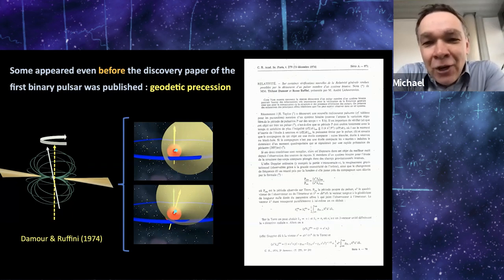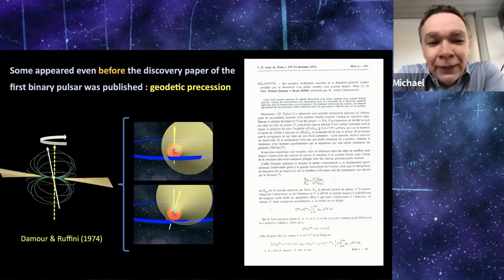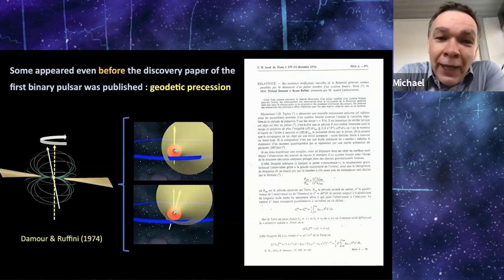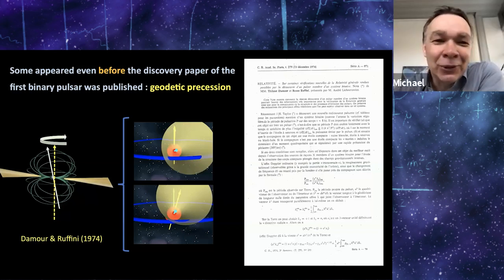Of course, I have to start with this paper somehow, because this is one that appeared actually before the first binary pulsar was properly published in a journal. This is the paper by Thibault and Remo on the geodetic precession of the Hulse-Taylor pulsar. And I will come back to this paper later in this talk.